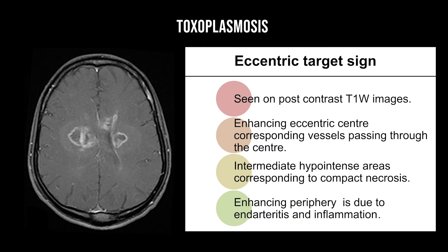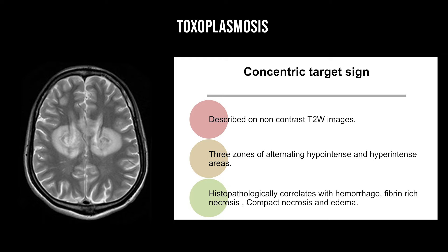In toxoplasmosis, post-contrast T1-weighted images show an enhancing eccentric center corresponding to vessels passing through the center, immediately hypointense areas corresponding to compact necrosis, and an enhancing periphery secondary to endarteritis and inflammation — this is called the eccentric target sign. A concentric target sign can also be seen on non-contrast T2-weighted images, which has three zones of alternating hypo- and hyperintense areas, also seen in cerebral toxoplasmosis.